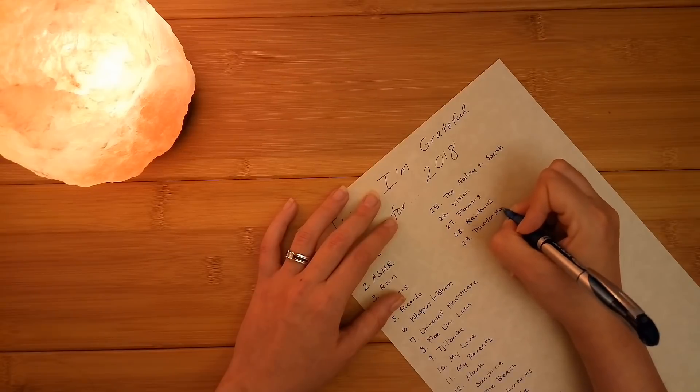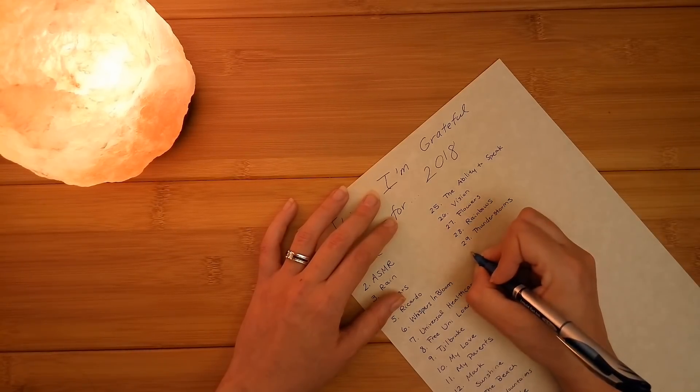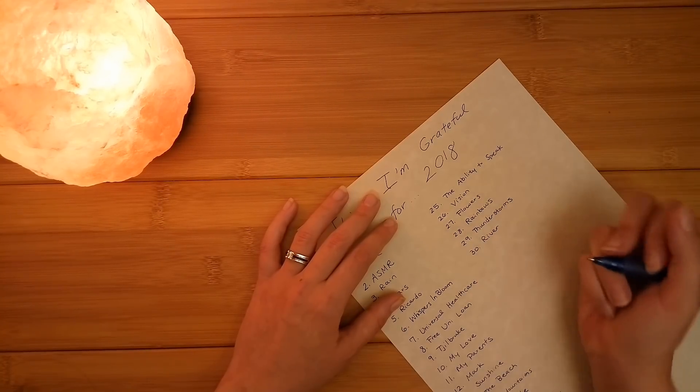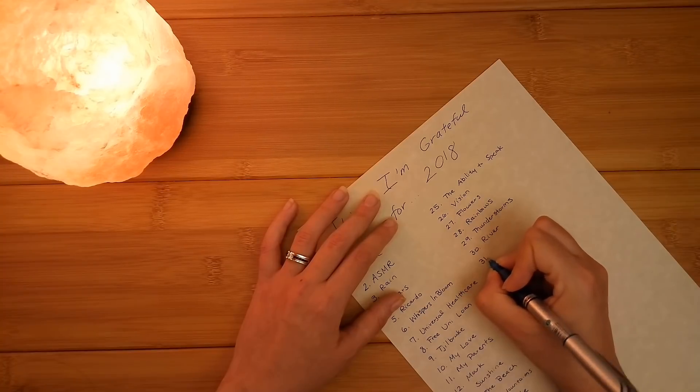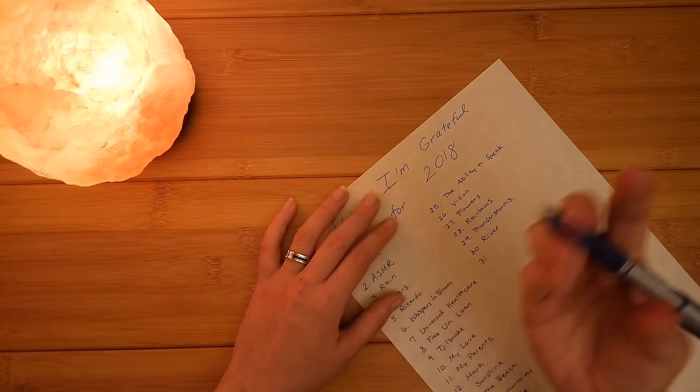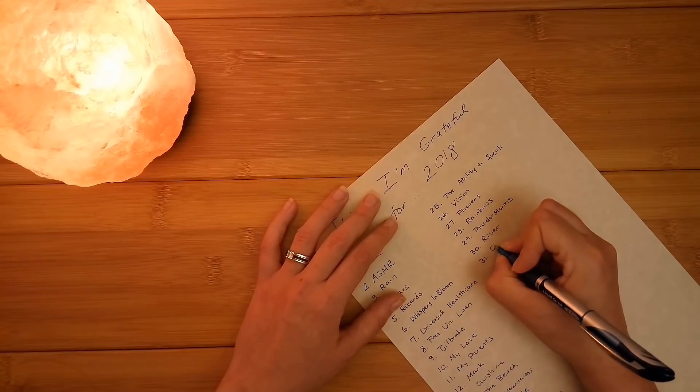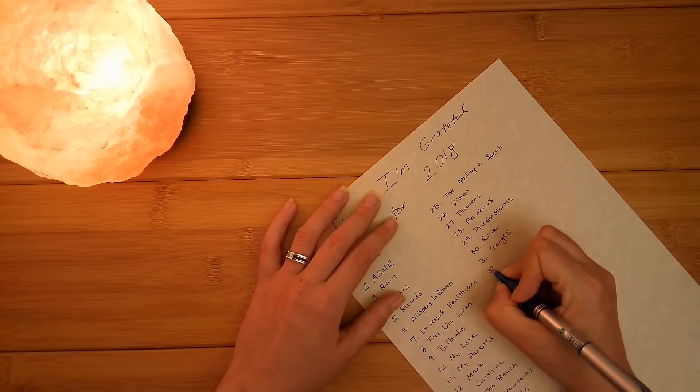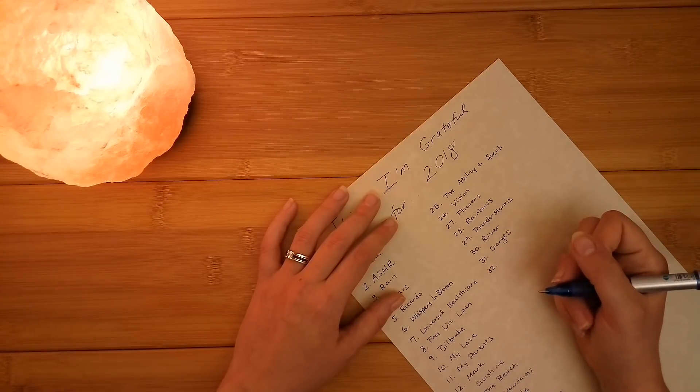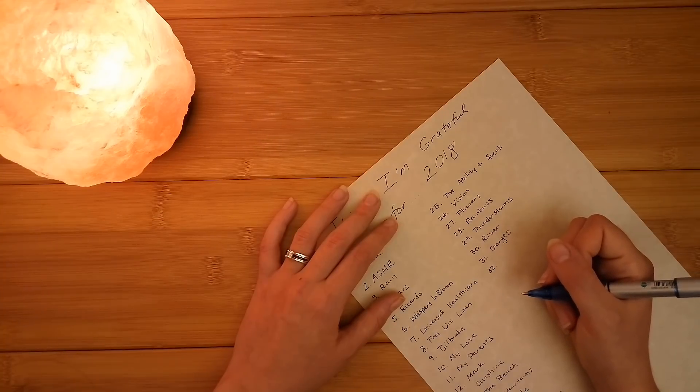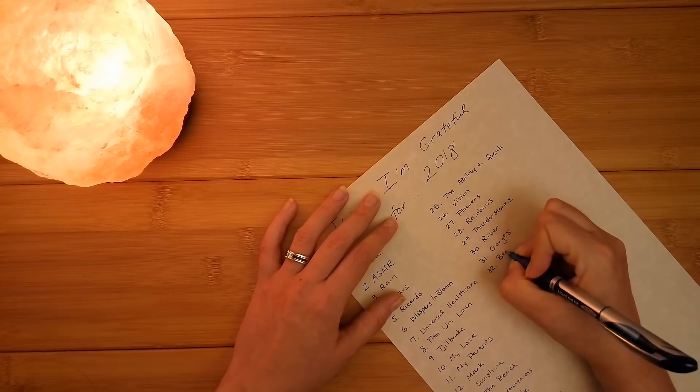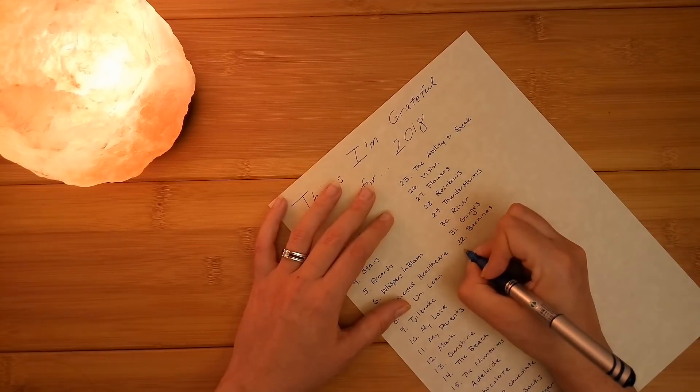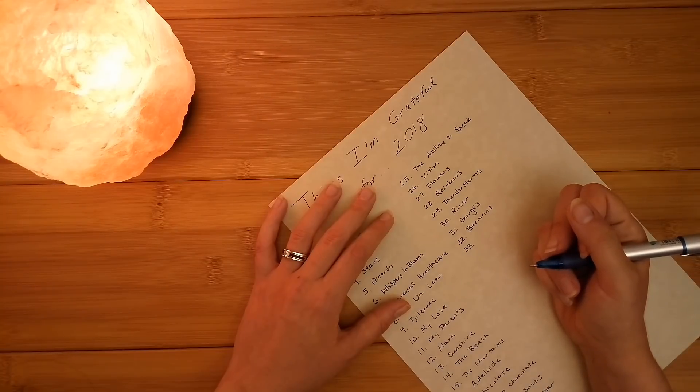And thunderstorms. There are so many natural wonders. Which are rivers. Another one. Which is decidedly separate from a beach. Rivers. And then I also like gorges. Grateful for gorges. Grateful for Berninas. Sewing would be so much less a joy if we didn't have Berninas to sew on.